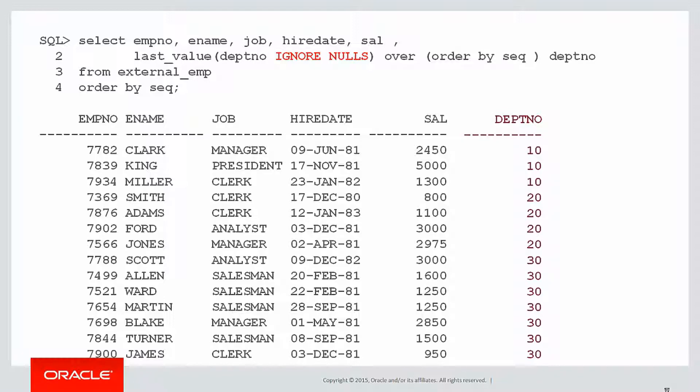Now when we run that, we can see our department number is nicely populated. Using last_value with IGNORE NULLS, we effectively filled in the blanks. Now we can answer the original question, what is the count of employees per department?